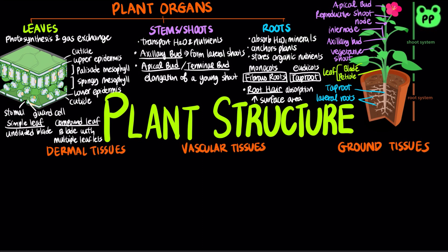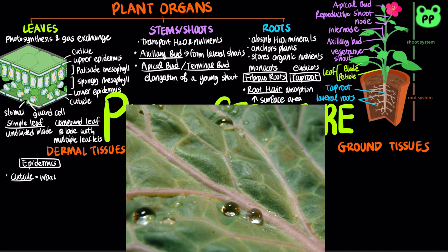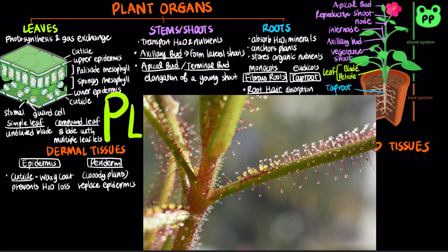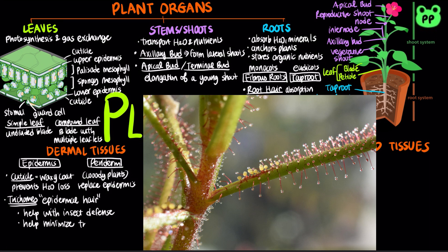In non-woody plants, the dermal tissue system consists of the epidermis. A waxy coating called the cuticle helps prevent water loss from the epidermis. In woody plants, protective tissues called periderm replace the epidermis in older regions of stems and roots. Trichomes, also known as epidermal hairs, are outgrowths of the shoot epidermis and can help with insect defense and also help minimize transpiration by breaking the flow of air at the lower epidermis of a leaf.